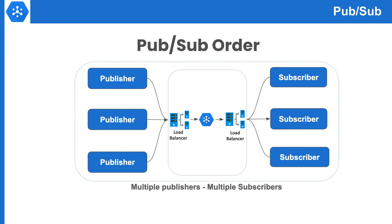No matter what message delivery system you use, you should only depend on order when it is absolutely necessary. Whenever possible, design your applications to avoid a dependency on message order — you will then be able to scale easily.